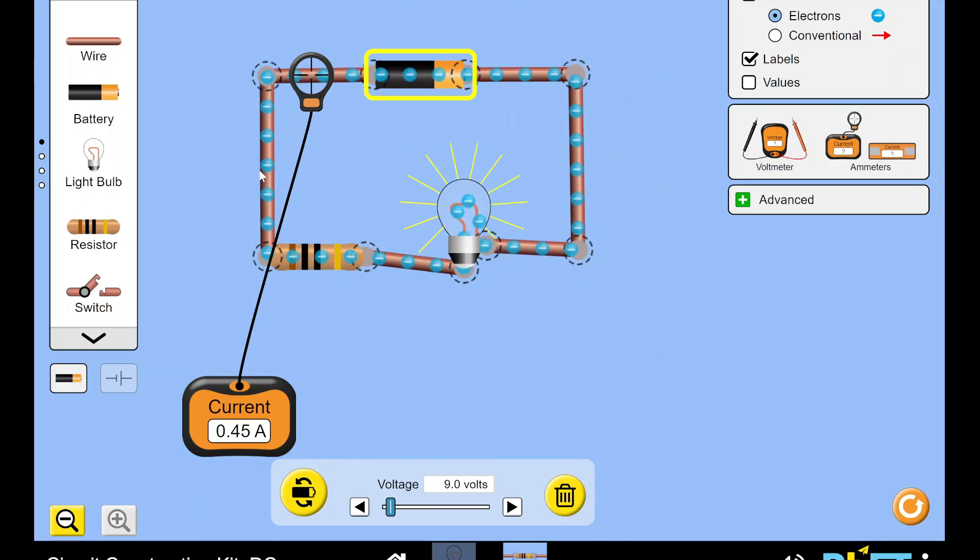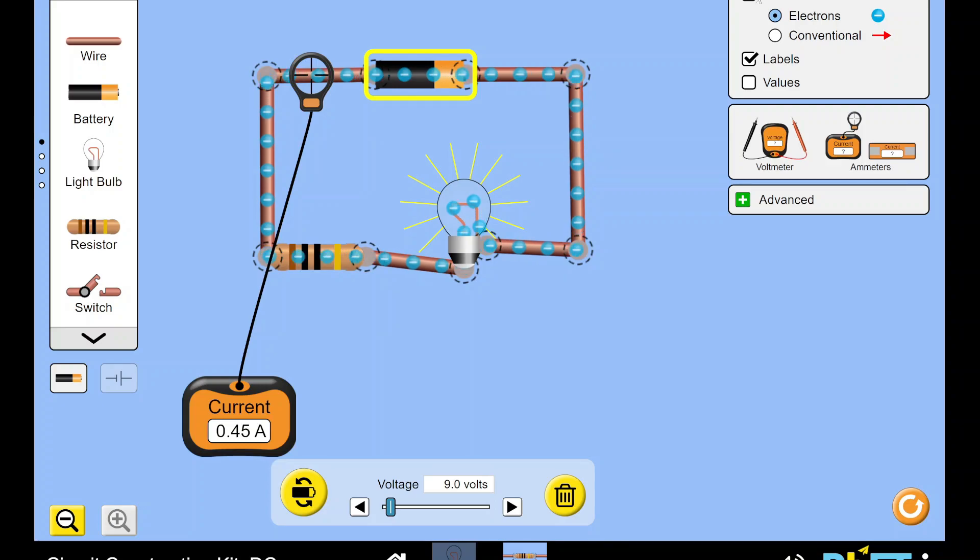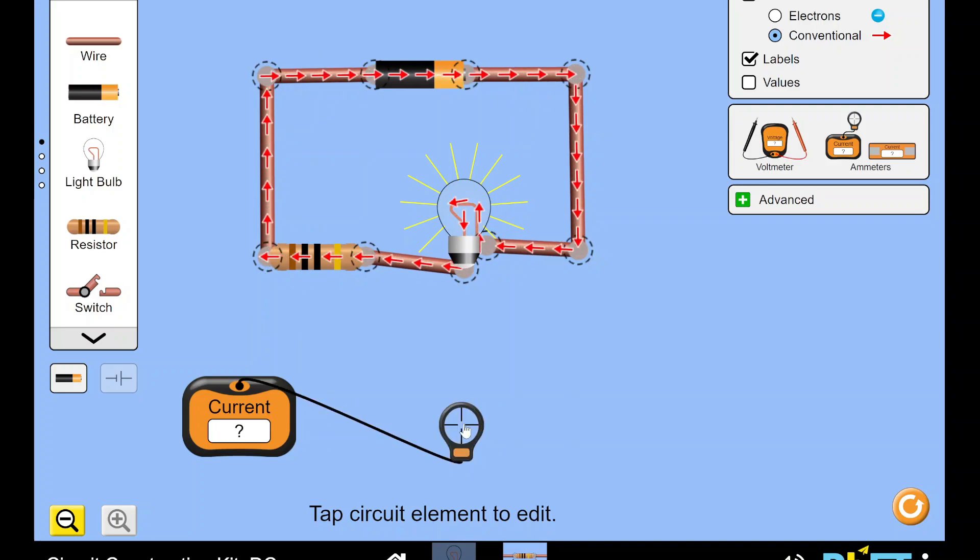Remember, though, of course, that this is showing us the actual electron movement. If we want to look at conventional current, we have to draw the current as going from the positive end of the battery round to the negative end. That's series circuits. Current is the same at all points on a series circuit.